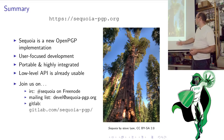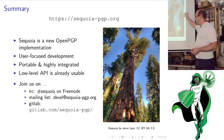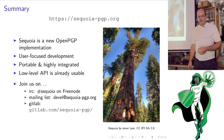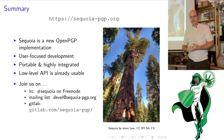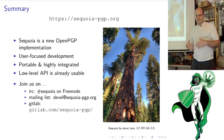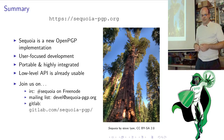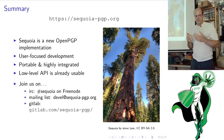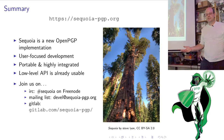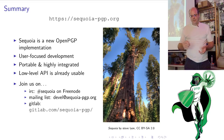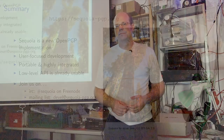Sequoia trees are large, old, and stable — cars can drive through them, you can turn them into tunnels, they don't move. Our version of Sequoia is a nice OpenPGP implementation in Rust that's hopefully as stable as a big Sequoia tree. Our focus is on community, we're portable and highly integrated with targeted environments. The low-level API is already usable and you're welcome to join us on IRC, on our mailing list, or contribute via GitLab. Thank you.